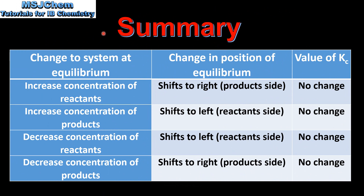Let's finish with a summary covering the change to the system, the change in position of equilibrium, and the change in Kc. Increasing the concentration of reactants shifts equilibrium to the right; increasing the concentration of products shifts it to the left. Decreasing the concentration of reactants shifts it to the left, and decreasing the concentration of products shifts it to the right.